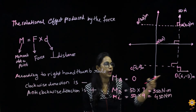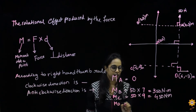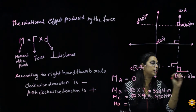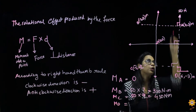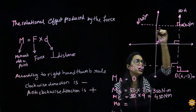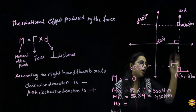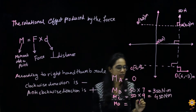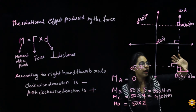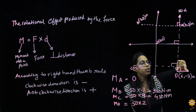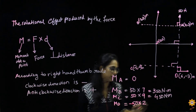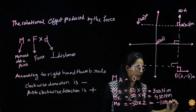The next point is D — moment about point D. From point D, the line of action of the force at A gives a perpendicular distance: from O to A it is 4, and from there to D it is 6, so the distance is 2. The force is 50. Checking the direction — taking my finger in the direction of force — it is in the clockwise direction, which we consider negative. So the moment about D is minus 100 newton-meters.